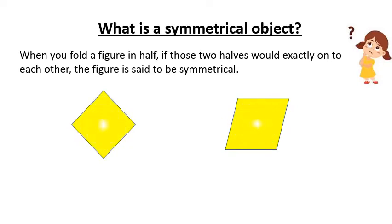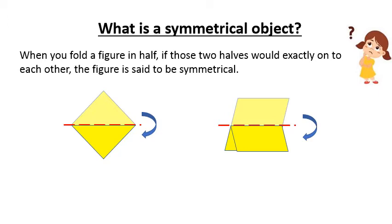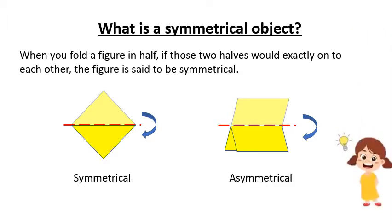Look at the examples given below. When we fold them in halves, one figure is fit exactly and the other figure is not. So the first shape is symmetrical and the other shape is asymmetrical.